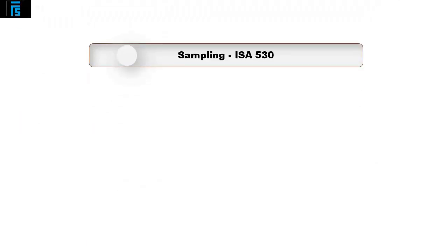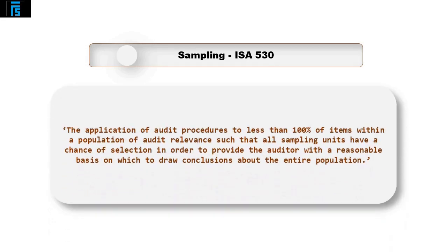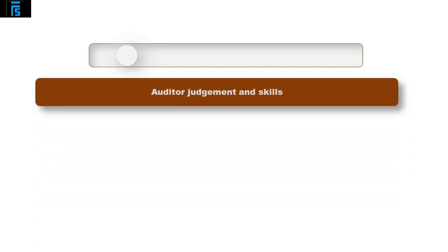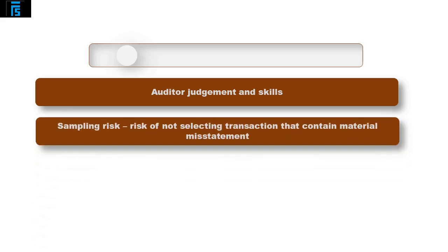The next area of gathering evidence is choosing the transactions to test. Sampling is defined in ISA 530 as the application of audit procedures to less than 100% of items within a population of audit relevance, such that all sampling units have a chance of selection in order to provide the auditor with a reasonable basis on which to draw conclusions about the entire population.